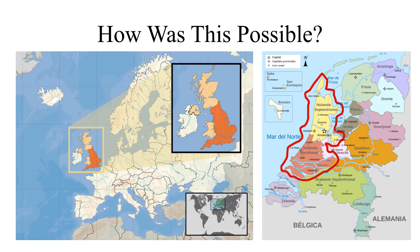England seemed to have luck, great timing, pragmatic people, a willingness to copy innovative Holland, and a dependable legal system. Common law was a bottoms-up approach the Normans adapted from the Anglo-Saxons. Property rights and rule of law were fundamental, despite kings claiming divine rights. Joint stock companies meant that entrepreneurs provided the money and took all the risks.